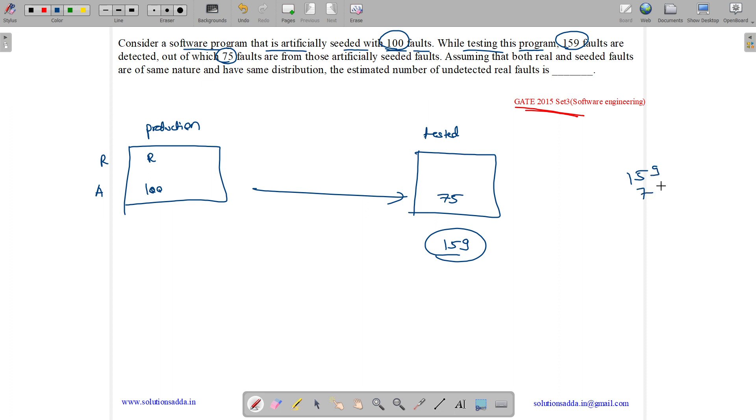So number of real faults are 159 minus 75, which equals 84. So 84 real faults are identified.